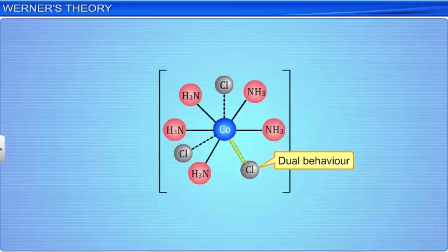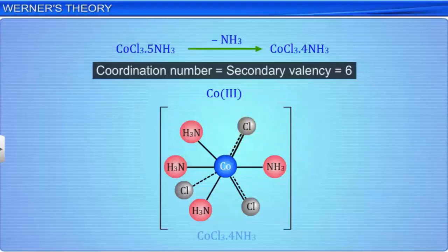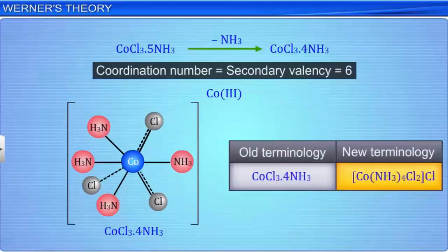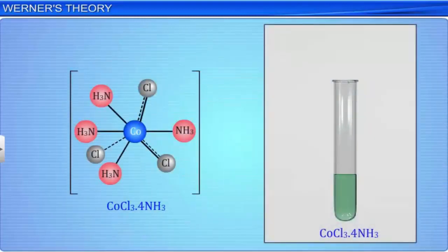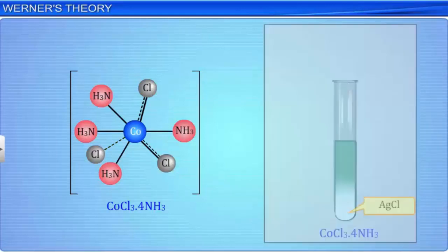Similarly, in CoCl3·4NH3, to satisfy the secondary valency of 6, 2 chloride ions assume dual behavior. In modern terms, the complex can be written as [Co(NH3)4Cl2]Cl. Thus, only one chloride ion can be precipitated as silver chloride. This complex on ionization gives two ions: one [Co(NH3)4Cl2]+ and the other a chloride ion.